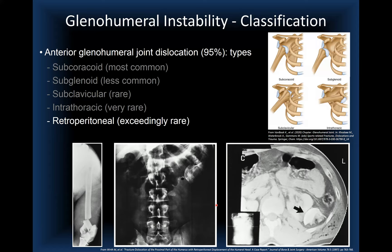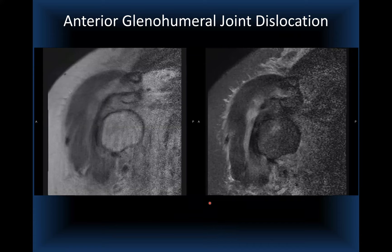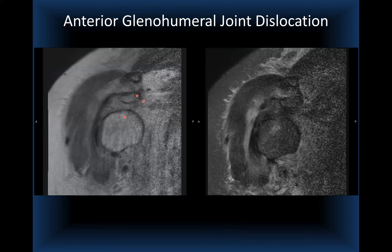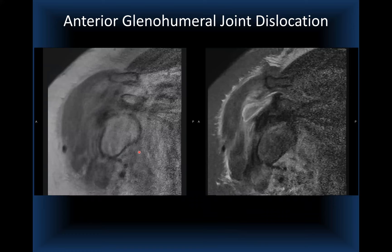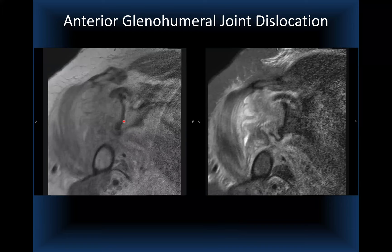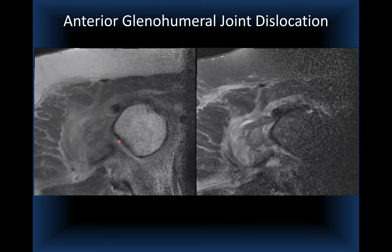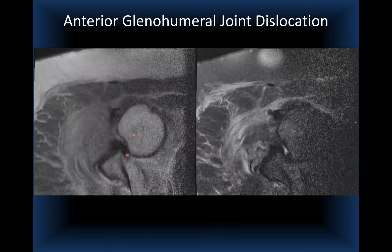We don't usually image dislocated patients on MRI, but sometimes patients present without disclosing a dislocation, or we image them when reduction cannot be achieved in the ER to check for interposed soft tissue or bone. In such a case, as we scroll from anterior to posterior, there is no humeral head at the glenoid because it is located anteriorly, with extensive soft tissue injury including rotator cuff, capsular, and ligamentous tears interposed in the joint.